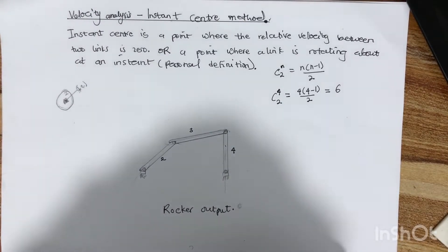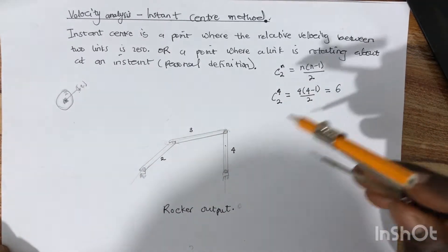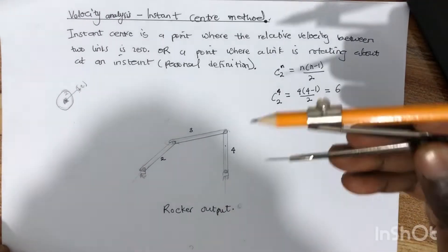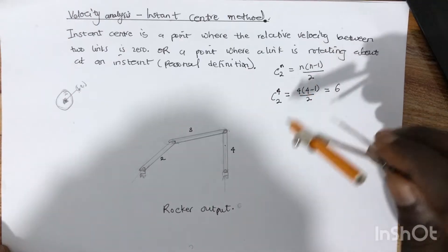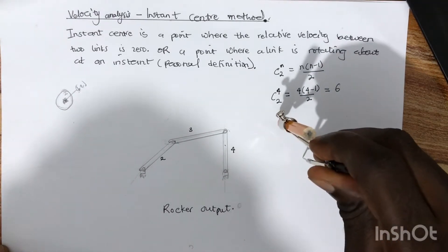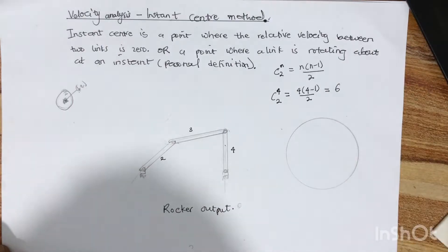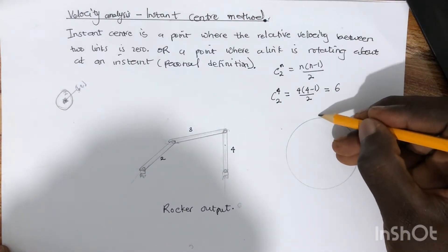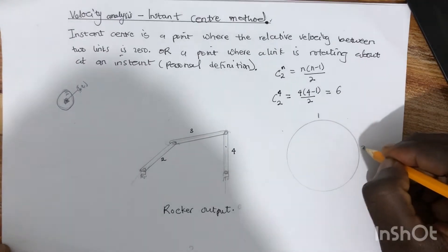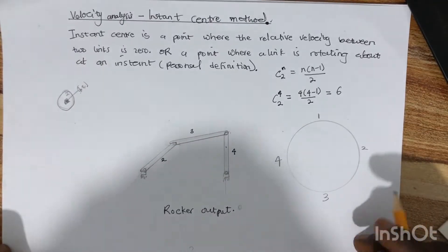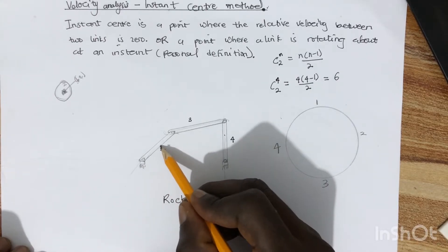We are expecting six instant centers. There is a simple method — a circle track diagram — that helps us identify which instant centers we have found and which ones are still missing. You draw a circle track and then label the links around it. Since we have four links, you place link one, link two, link three, and link four around the circle.